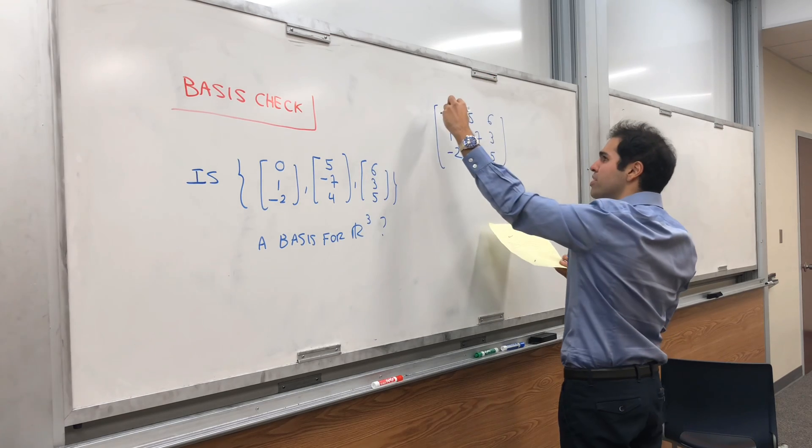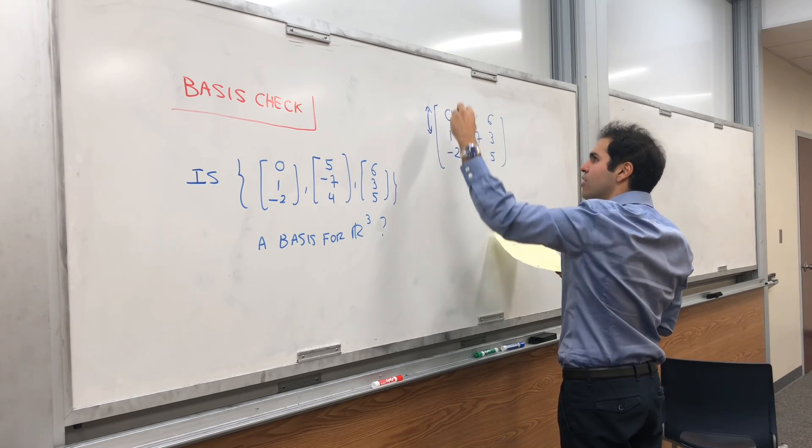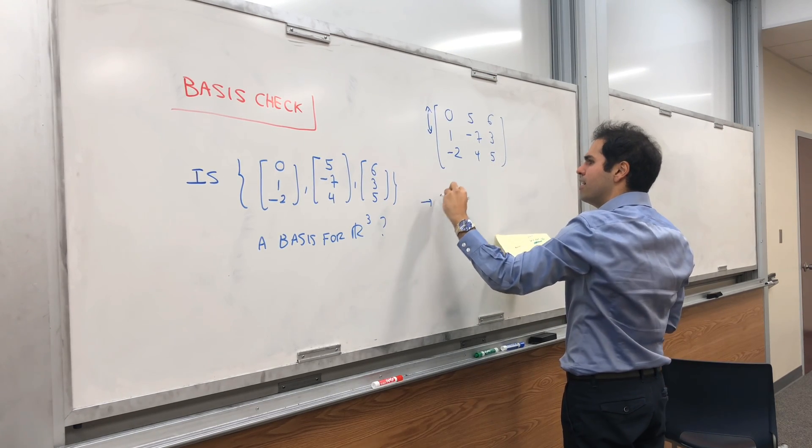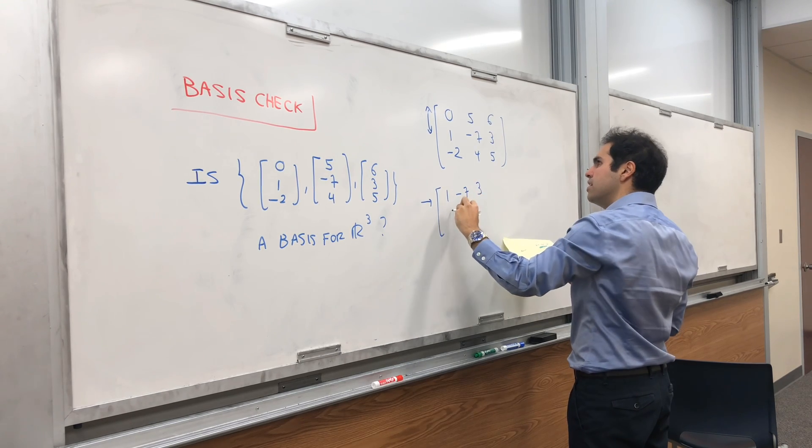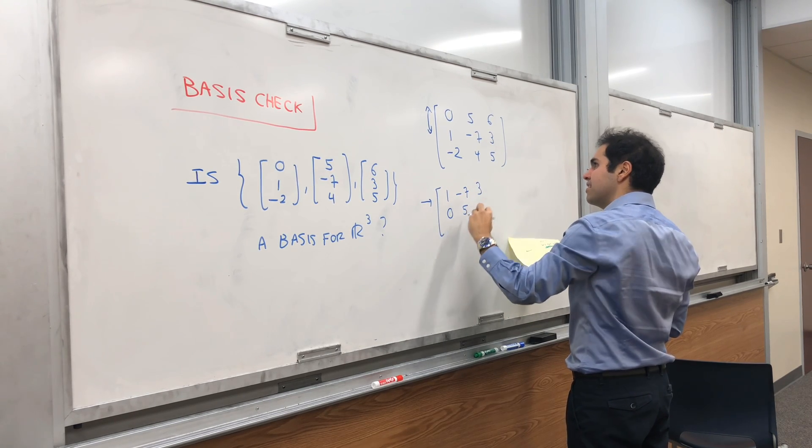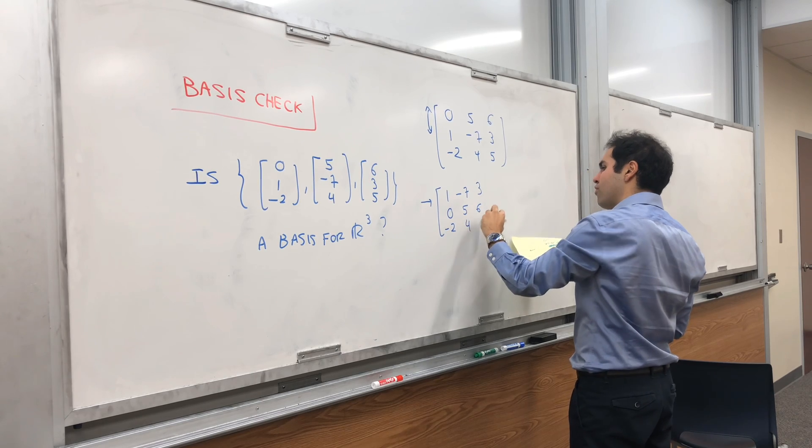So, how do we do this? The zeros ideally go down, so we interchange the rows. So, 1, minus 7, 3, 0, 5, 6, minus 2, 4, 5.